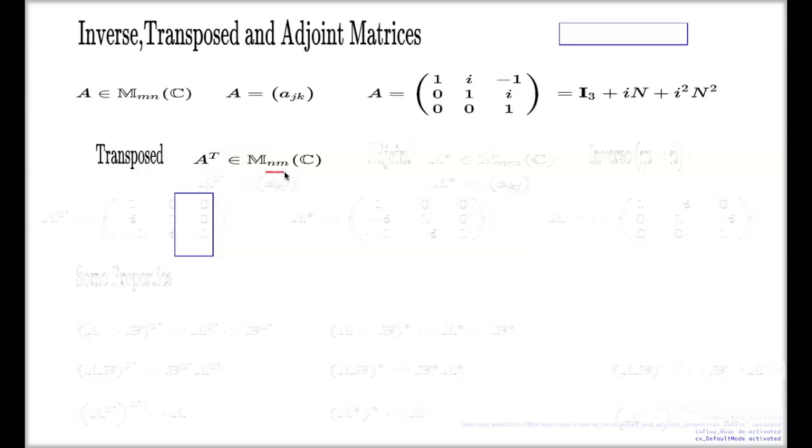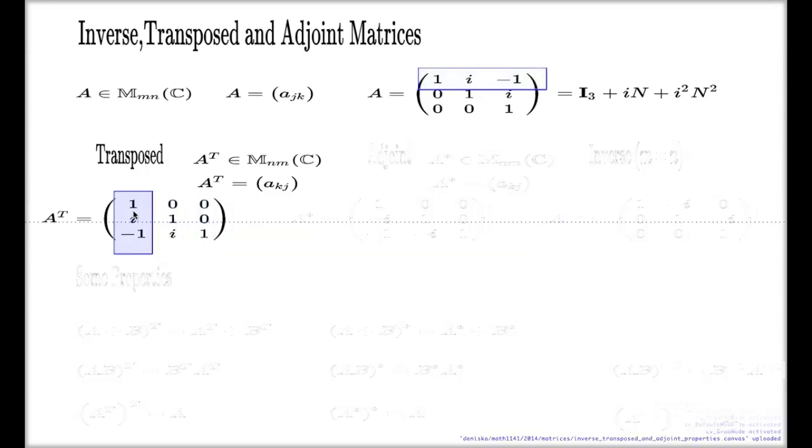Look at the sizing of that matrix. The sizing is opposite to this. And the entries of that matrix, look at this, you just flip the indices around. Rather than JK, you put them KJ. For instance, the transpose of this matrix, here it is.